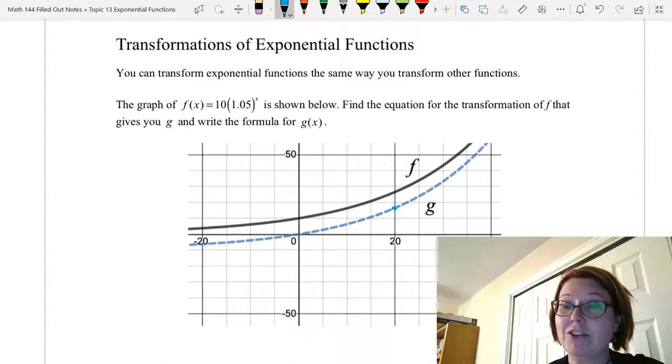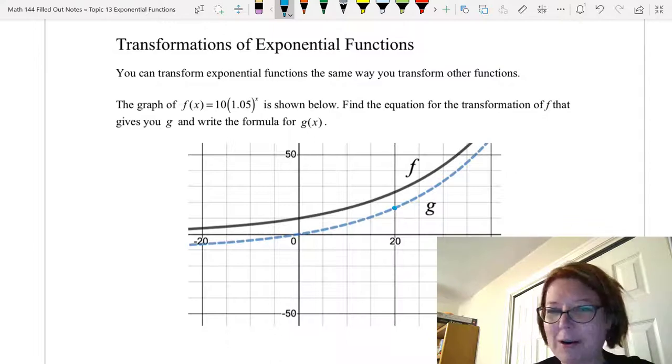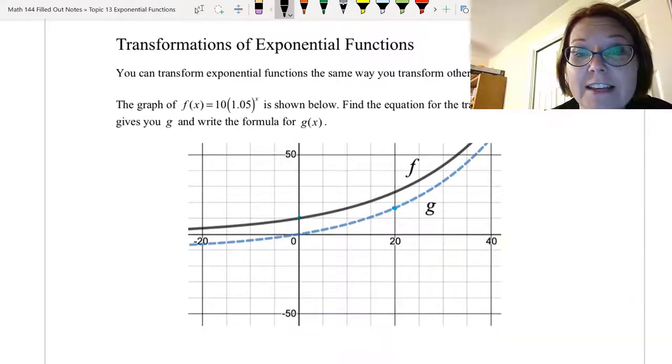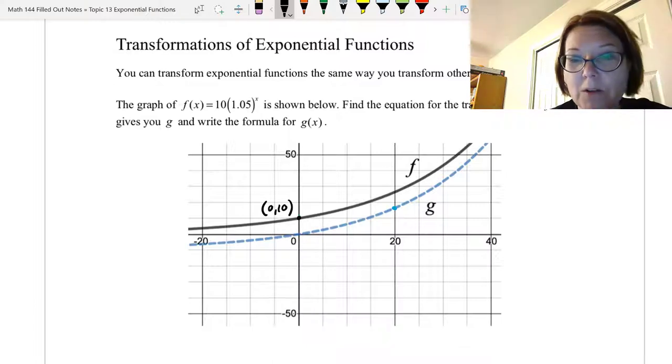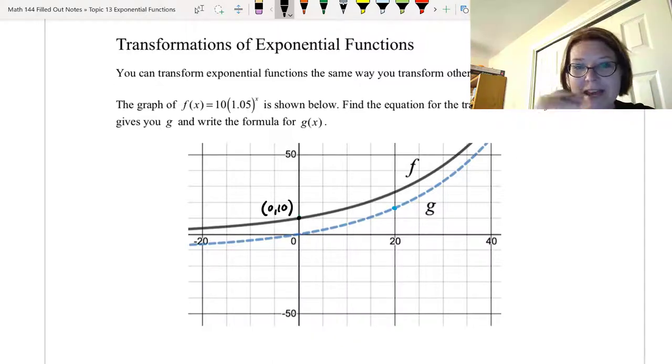We're going to start by taking a look at a graph of f and g where g is a transformation of f. Now we know what f is. f of x is 10 times 1.05 to the x power. So we know from everything we know about exponential functions that the y-intercept of the graph is 0 comma 10. We know the graph is increasing from that. We know there's a horizontal asymptote at y equals 0 and we know it's an exponential growth curve.